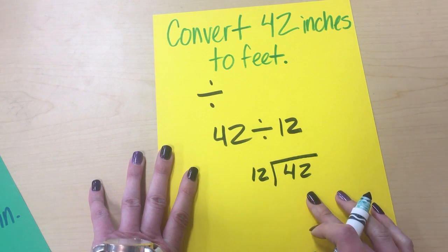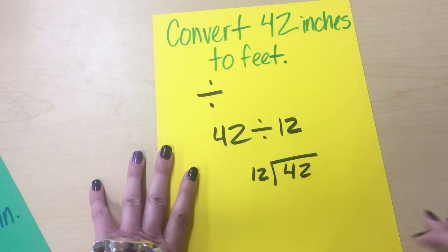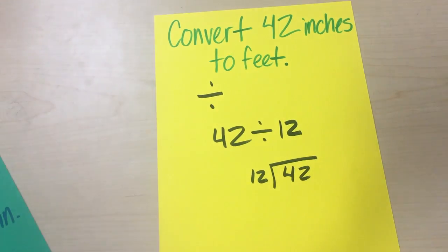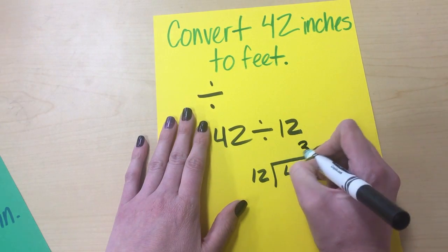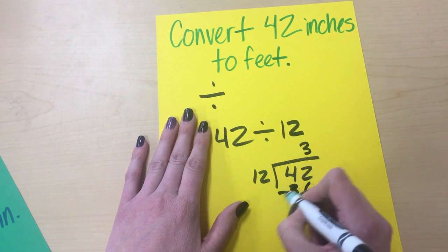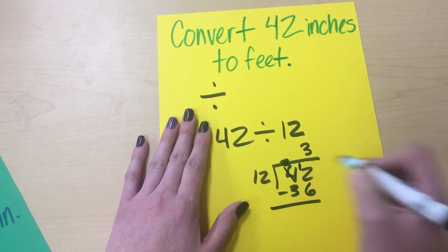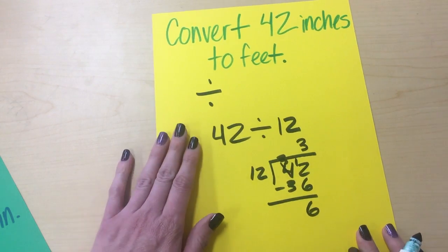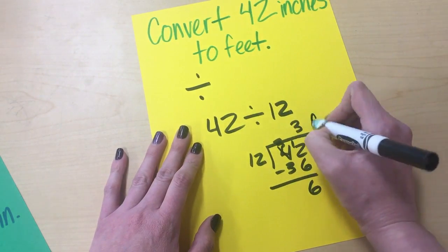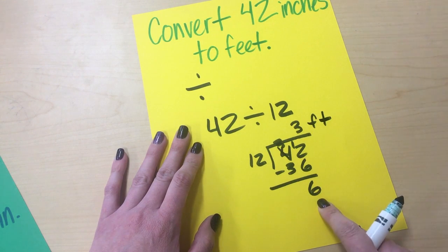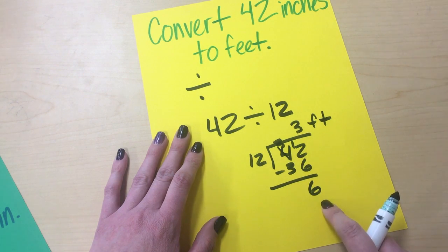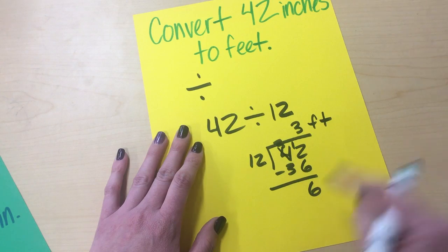How many times does 12 go into 42? Well, let's see. 12 times 2 is 24. That's not enough. 12 times 3 is 36. That's pretty close. This is less than this, so we picked a good number here. So we know it's three feet, right? But do we still have a remainder? We do. So some people might think, well, what do we do with this number right here? This is still in inches.